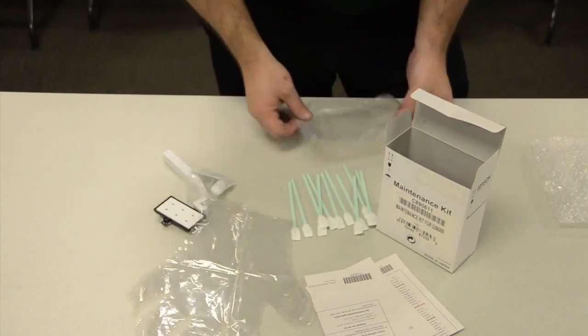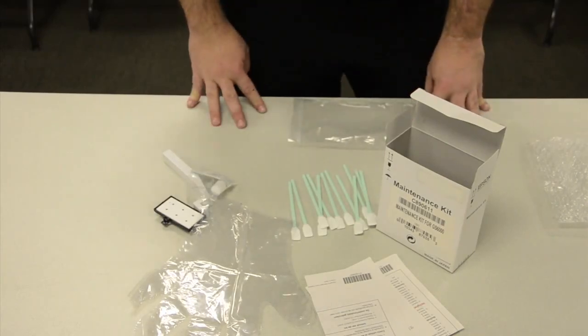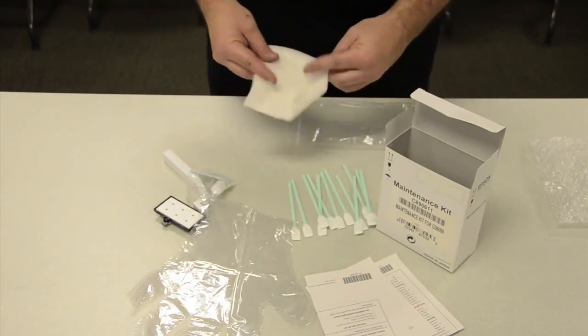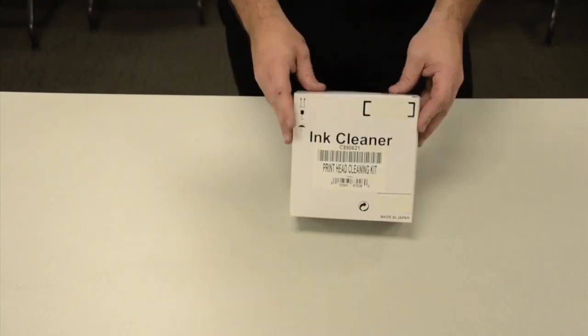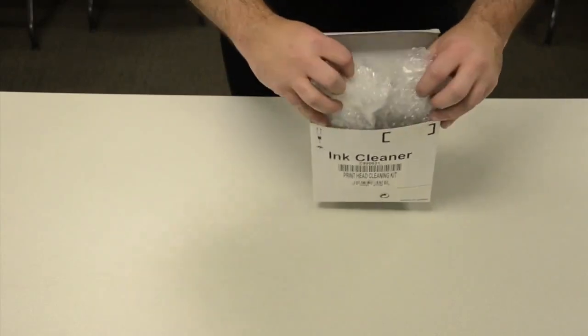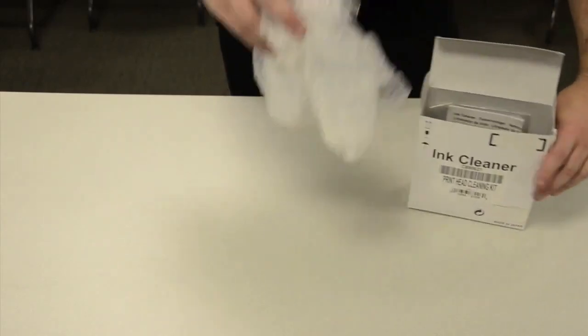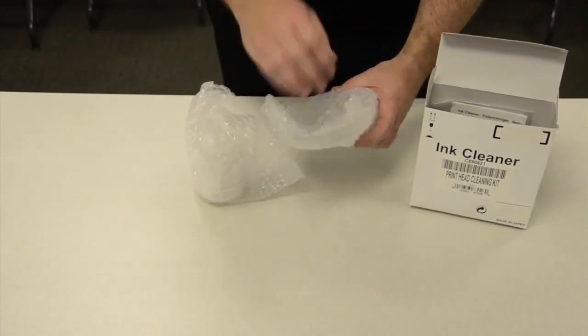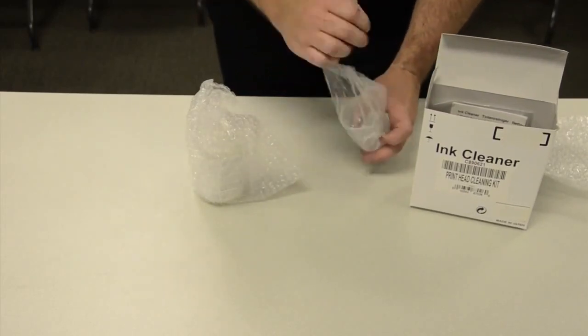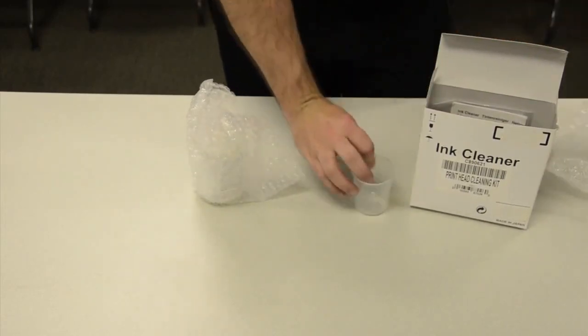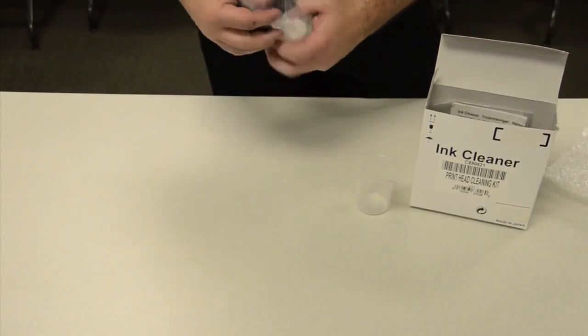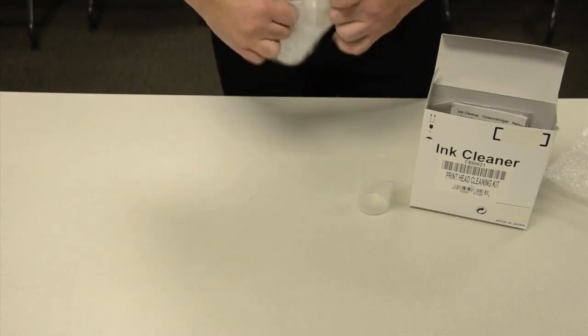Other items that you will need to clean the GS6000 properly is a lint-free cloth or rag to help wipe down any excess cleaning solution that will be used during the cleaning process. The other item you will need is the ink cleaner kit, part number C890621. The ink cleaner kit will consist of a plastic beaker. We will fill the beaker with cleaning fluid and we will be able to dip our foam tip swabs into the fluid to clean the print head. The kit will also contain a bottle of cleaning fluid.